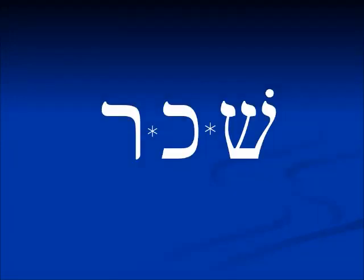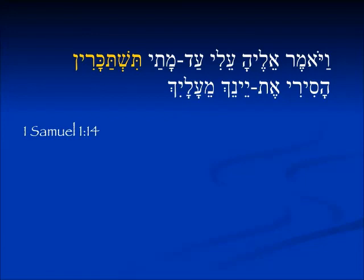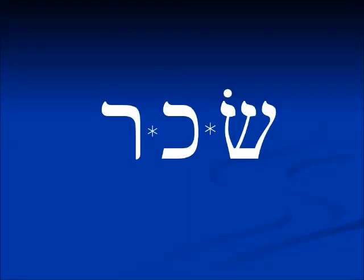Another verb root is shachar, which has to do with strong drink. In 1 Samuel 1:14 we see a second person feminine singular imperfect: tishtakari. Eli is talking to Hannah, asking when she will stop being drunk, because he sees her lips moving but no sound is coming out — she is praying for the birth of her child. With a sin, shachar is also the root for the name Issachar and has to do with earning wages.